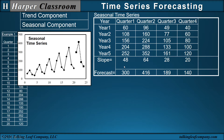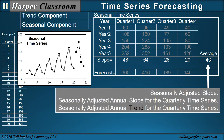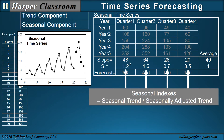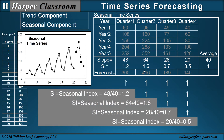Let's go a little deeper. Since we have our seasonal slopes — our seasonal trends — we can average those, and that gives us our seasonally adjusted slope, or more precisely, the seasonally adjusted slope for the quarterly time series. Now that I have the seasonal slope and the seasonally adjusted slope, I can divide the seasonal trend by the seasonally adjusted trend to get my seasonal indexes. Those are the calculations for each of the seasonal indexes.